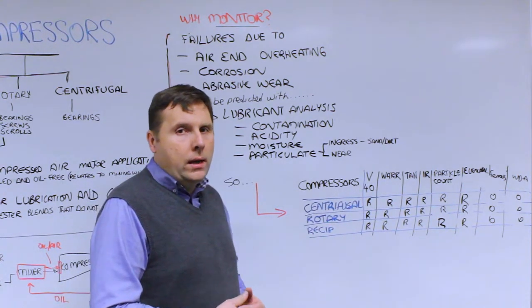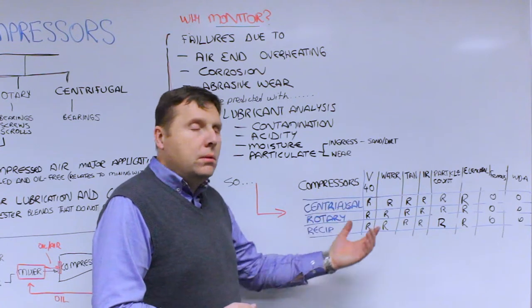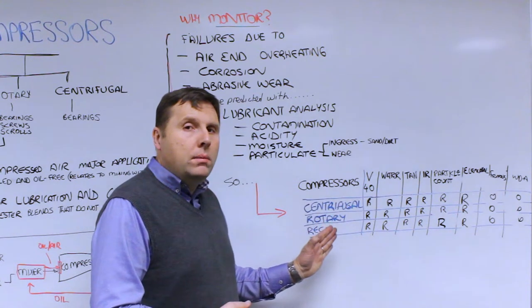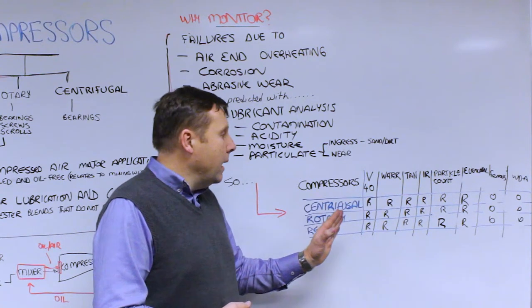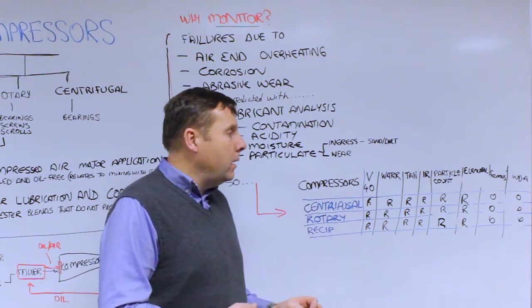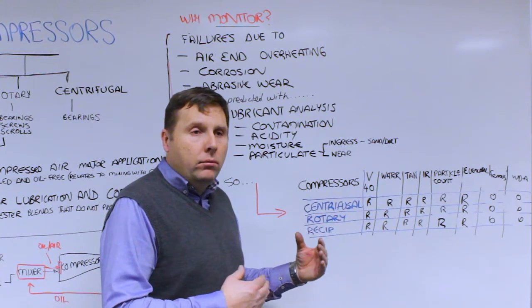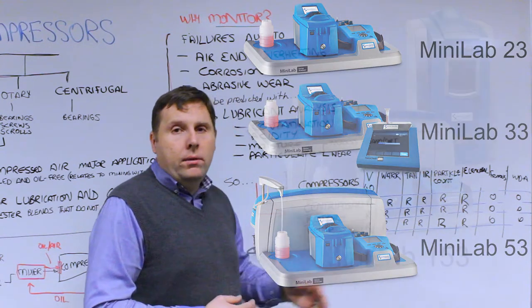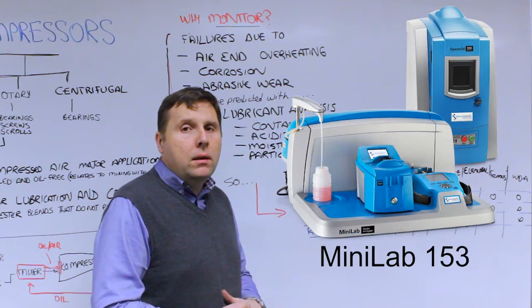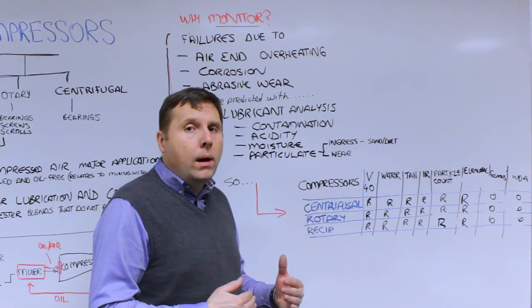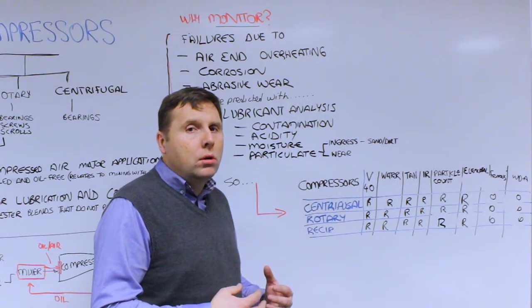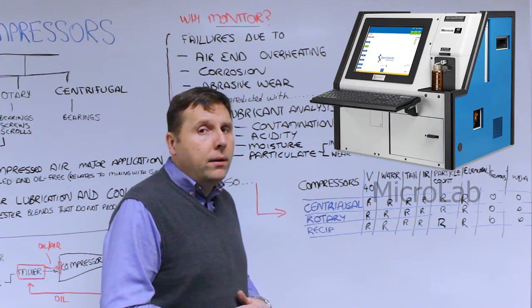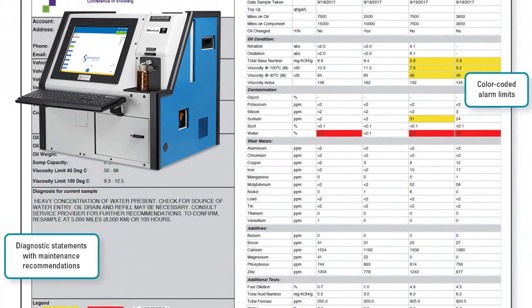So our options for on-site analysis for compressors really are focused around being able to measure all the key tests that we just described. Certainly if you just want to be able to look at the chemistry and the contamination that would be the viscosity, water, acid, infrared, the mini lab is perfect for that. If you want to fully expand out in an industrial environment you have the full mini lab 153 series that's available. If you have applications that are mobile or mining applications where you have onboard compressors on mobile equipment or on mine sites then the micro lab is a great solution for that because it's got built-in all the key tests that are necessary for those applications.